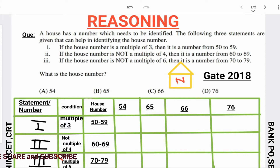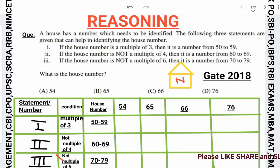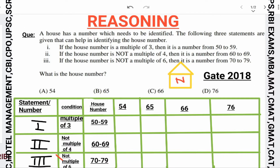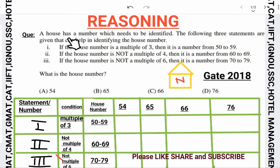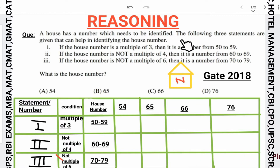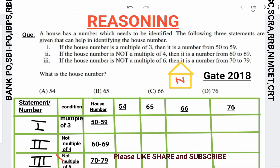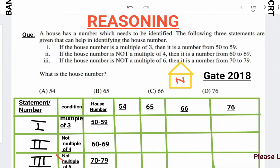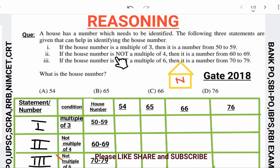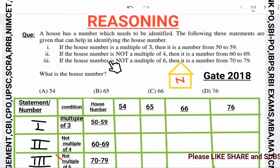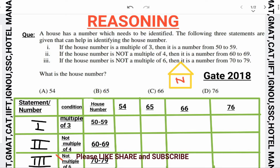Hello friends, welcome to our channel. Today we will solve a question which has been asked in GATE 2018. A house has a number which needs to be identified. Let N be the number of the house. We have been given three statements, and on the basis of these three statements we have to find the house number.